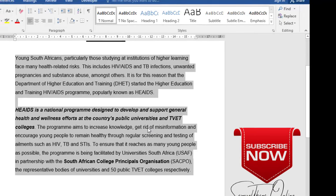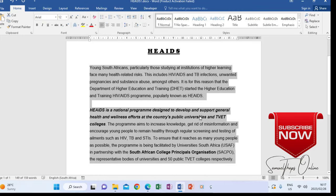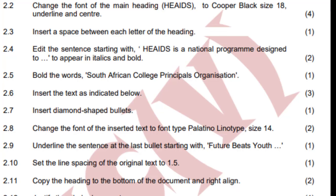And then on the instructions again, the second one there, it is talking about where I had to change the first sentence — change the sentence into italics and bold as indicated. I've done it. So you see that these instructions are now starting to look like the document that I'm editing here, because I'm following the instructions step by step. Now, when you look at the instructions again, it says insert diamond shaped bullets.